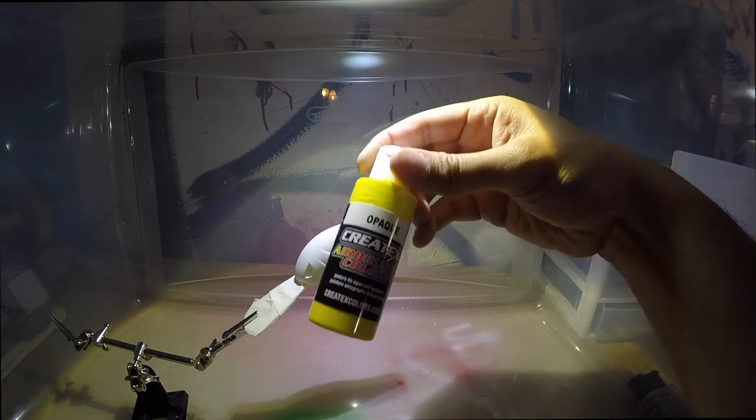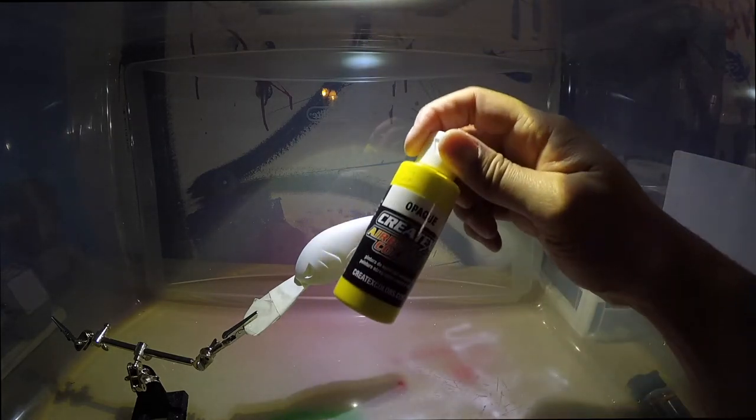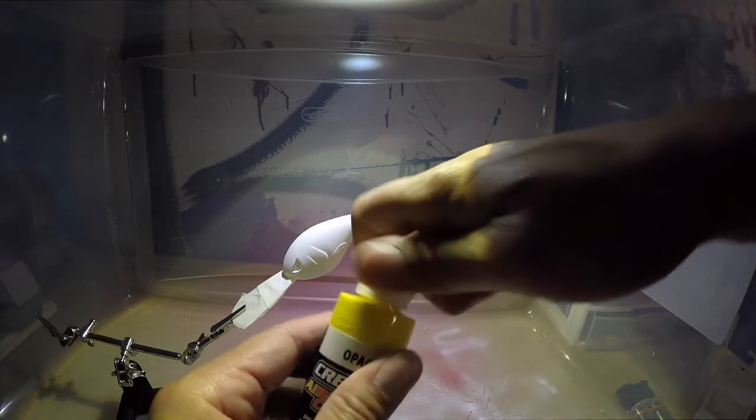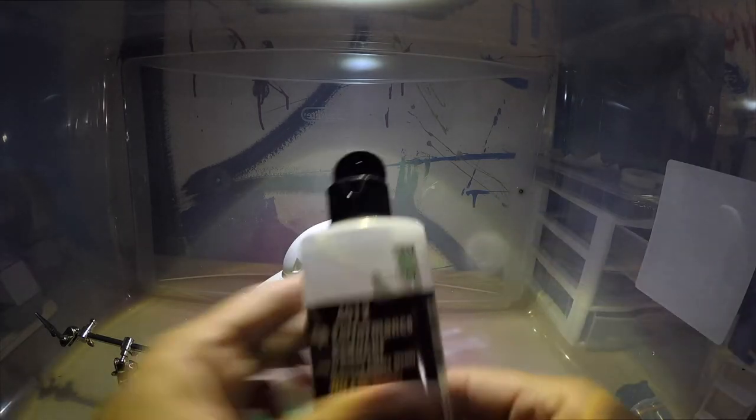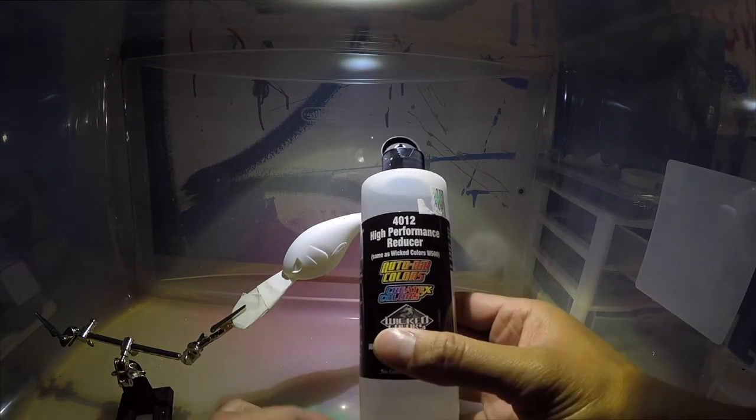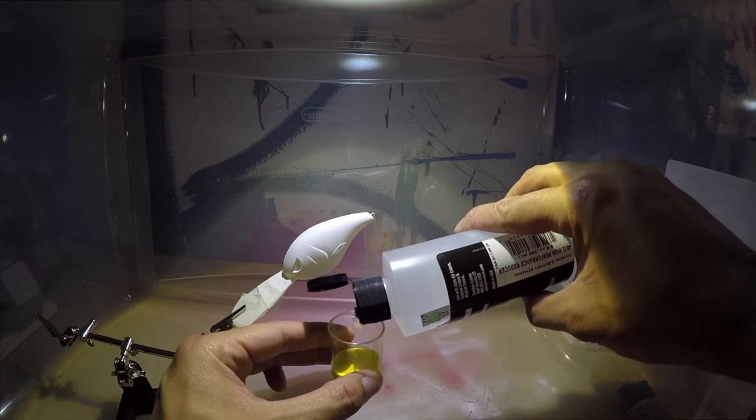After the white you're going to grab you some of this yellow here, mix it up pretty good. What you want to do with this paint, this is that Createx, you got to mix a little bit of the high performance reducer in there so you can thin out your paint a little bit so it can spray a little bit better.